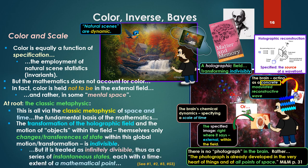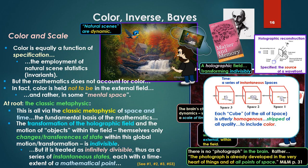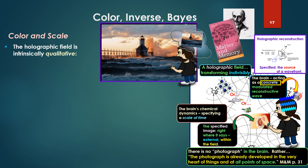But it is treated as infinitely divisible, thus as a series of instantaneous states, each with a time extent of a mathematical point. The holographic field, as our heron-like fly flies, it is partitioned into a set of instantaneous states along with the whole rest of the universe, our cube of the all of space. And each cube is utterly homogeneous, stripped of all quality, to include color, because a time extent of a mathematical point cannot allow for quality.